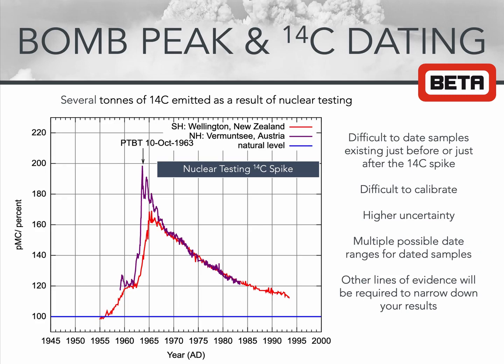The largest impact on the radiocarbon calibration curve in recent times comes from above-ground nuclear testing, which released large numbers of neutrons into the atmosphere resulting in the creation of 14C. From about 1950 until 1963, it was estimated that several tons of 14C was created as a result of this testing. The immediate effect was to almost double the amount of 14C in the atmosphere, with the peak level occurring in 1964 for the northern hemisphere. This resulted in a very clear peak in the radiocarbon calibration curve, as you can see here.